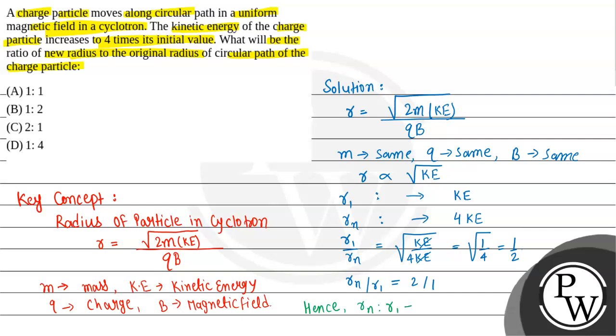Hence rn is equal to 2 times r1, or rn:r1 is equal to 2:1. And this is the final answer of the given question. So if you see the options given, then option D is the correct choice. I hope you understood the solution, thank you.